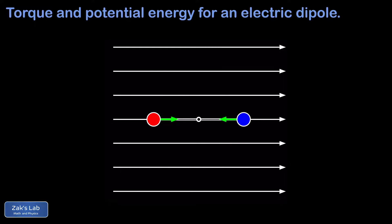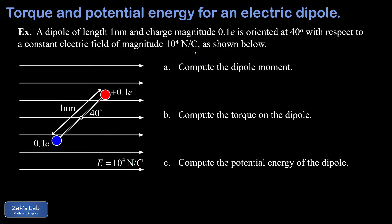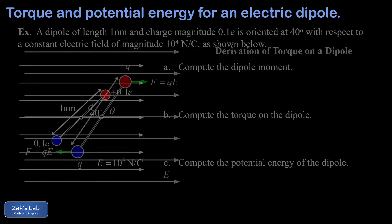So that's the second thing on our agenda — we want a compact formula for the potential energy of a dipole in a constant electric field, again as a function of angle measured with respect to the field. Finally, we'll put our new formulas for torque and potential energy into practice by solving an example problem with specific numbers at the end of the video.